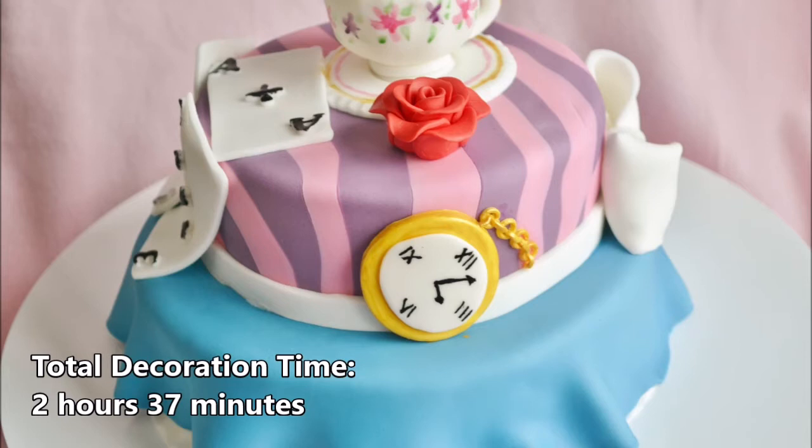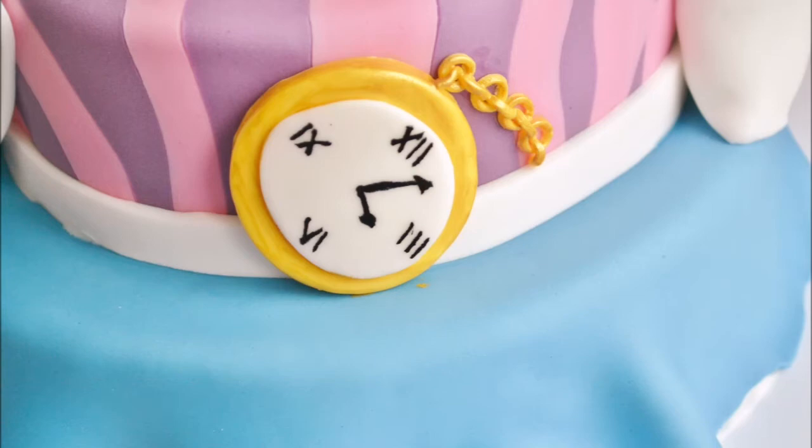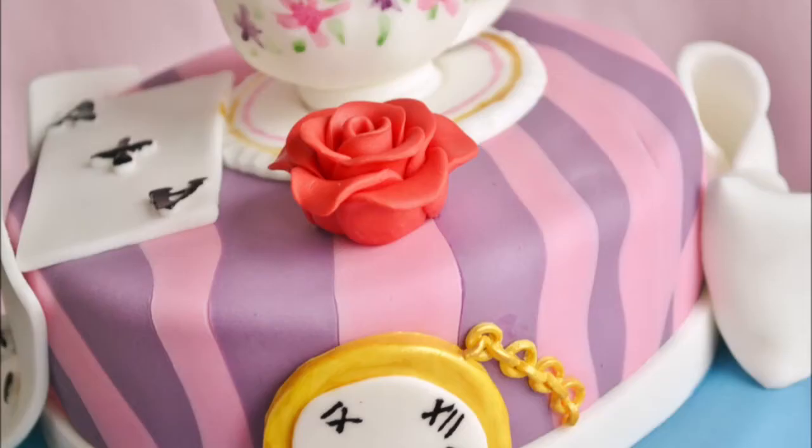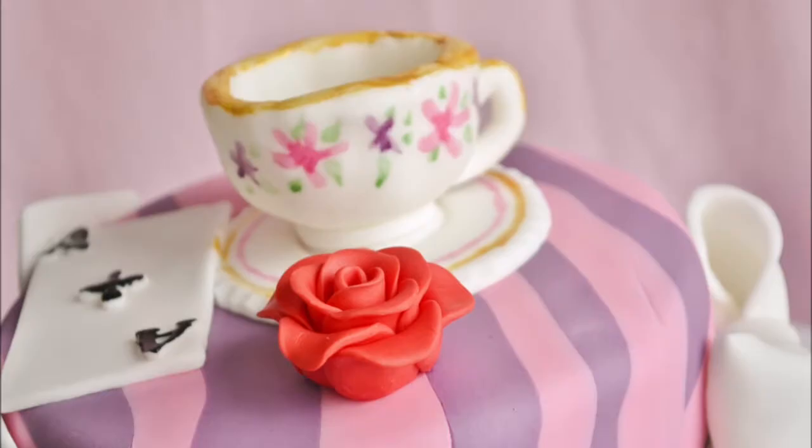I love this Alice in Wonderland cake. It has all the things I wanted to include: the teacup, playing cards, rose, watch, bow, doorknob, stripes, and ruffles. There's Alice everywhere.